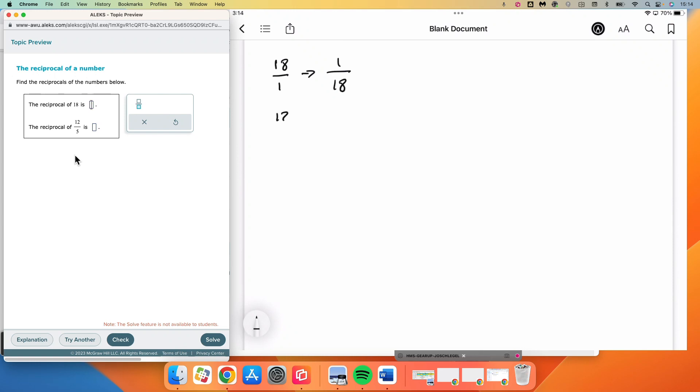And then for the second one, 12 over 5, we just simply flip it over, and that becomes 5 over 12.